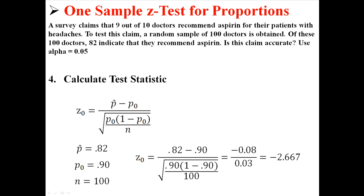All I have to do is plug those things into the equation. And I found out that our calculated z is negative 2.667. I'm going to go to the next page now. If you want to write that down, you can pause the video and come back to it when you're done.